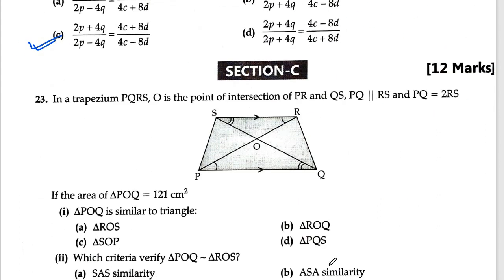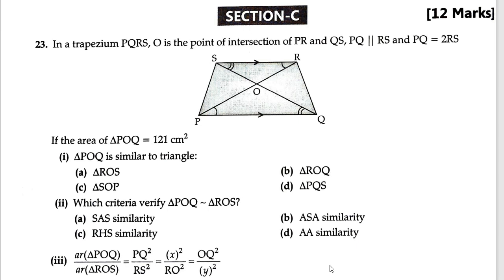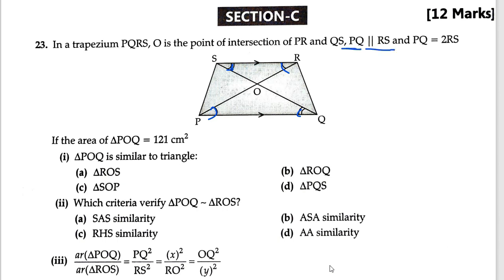Question 23: PQRS is a trapezium with PQ parallel to RS. PQ equals 2RS and its height is double — if RS is x then height is 2x. Find the area of triangle POQ. The answer is A because POQ and ROS will be similar triangles — the ratio is 1 to 1.